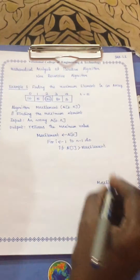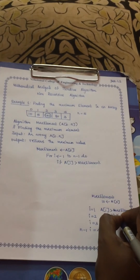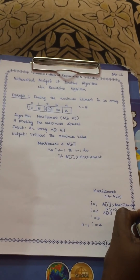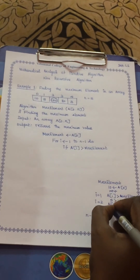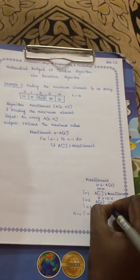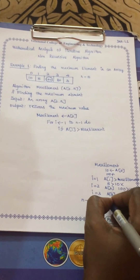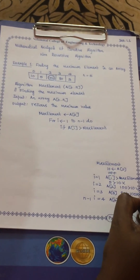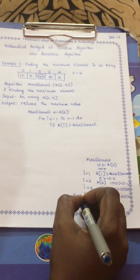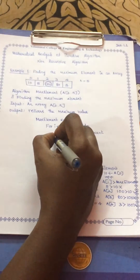Now i gets incremented to 2. We check a[2], which holds 100, against the current maximum of 10. The condition is true, so the maximum element is updated to 100. i is incremented to 3; a[3] holds 80, but the maximum is now 100, so the condition fails. i is incremented to 4; a[4] is 3, and again the condition fails. When all iterations are complete, the maximum element is 100, and we return that value.